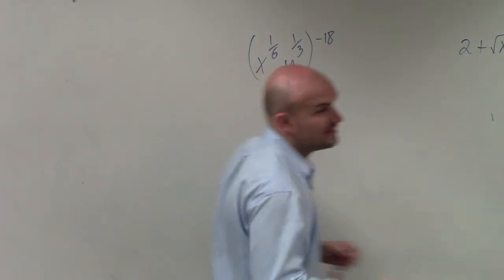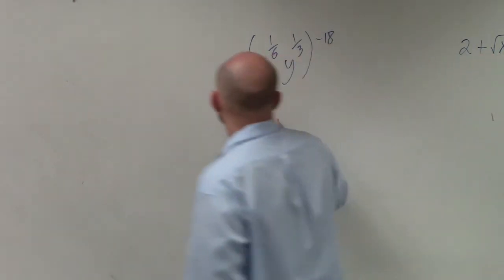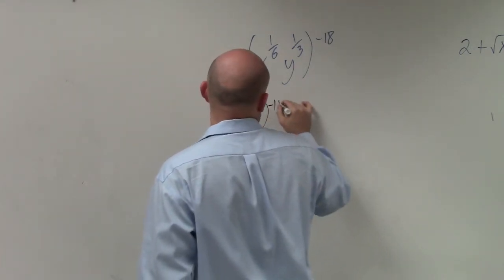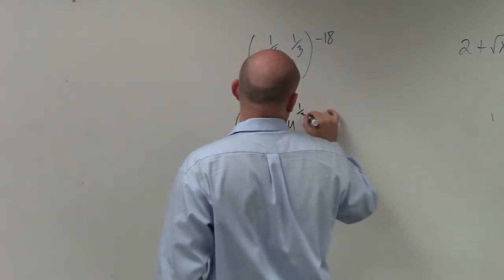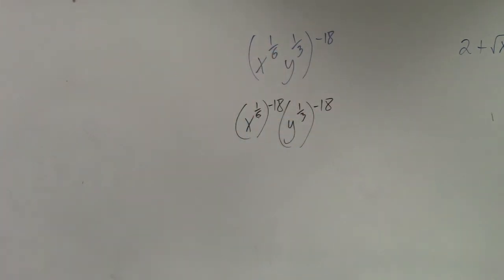So basically what I'm going to do is I'm going to distribute the negative 18th to both of these. So I have x to the 1/6 raised to the negative 18th, y to the 1/3 raised to the negative 18th. Now remember, guys, what do we do when we have an exponent raised to a power? Do you remember what we do with the powers?